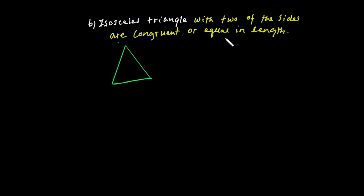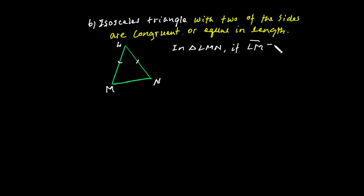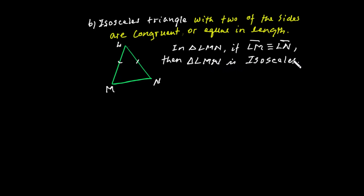An isosceles triangle is a triangle with two sides that are congruent. For example, in triangle LMN, if side LM is congruent to side LN, then triangle LMN is an isosceles triangle.